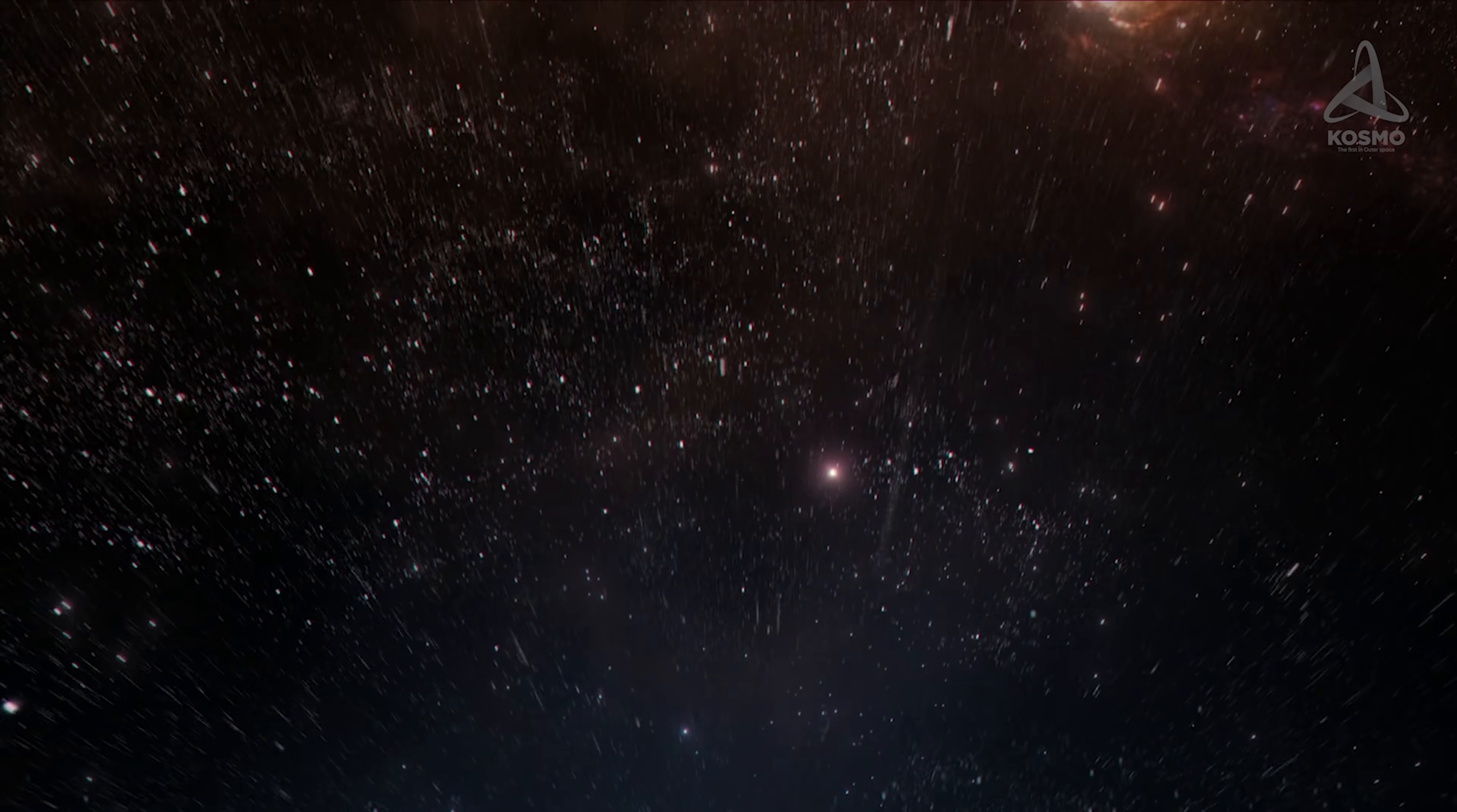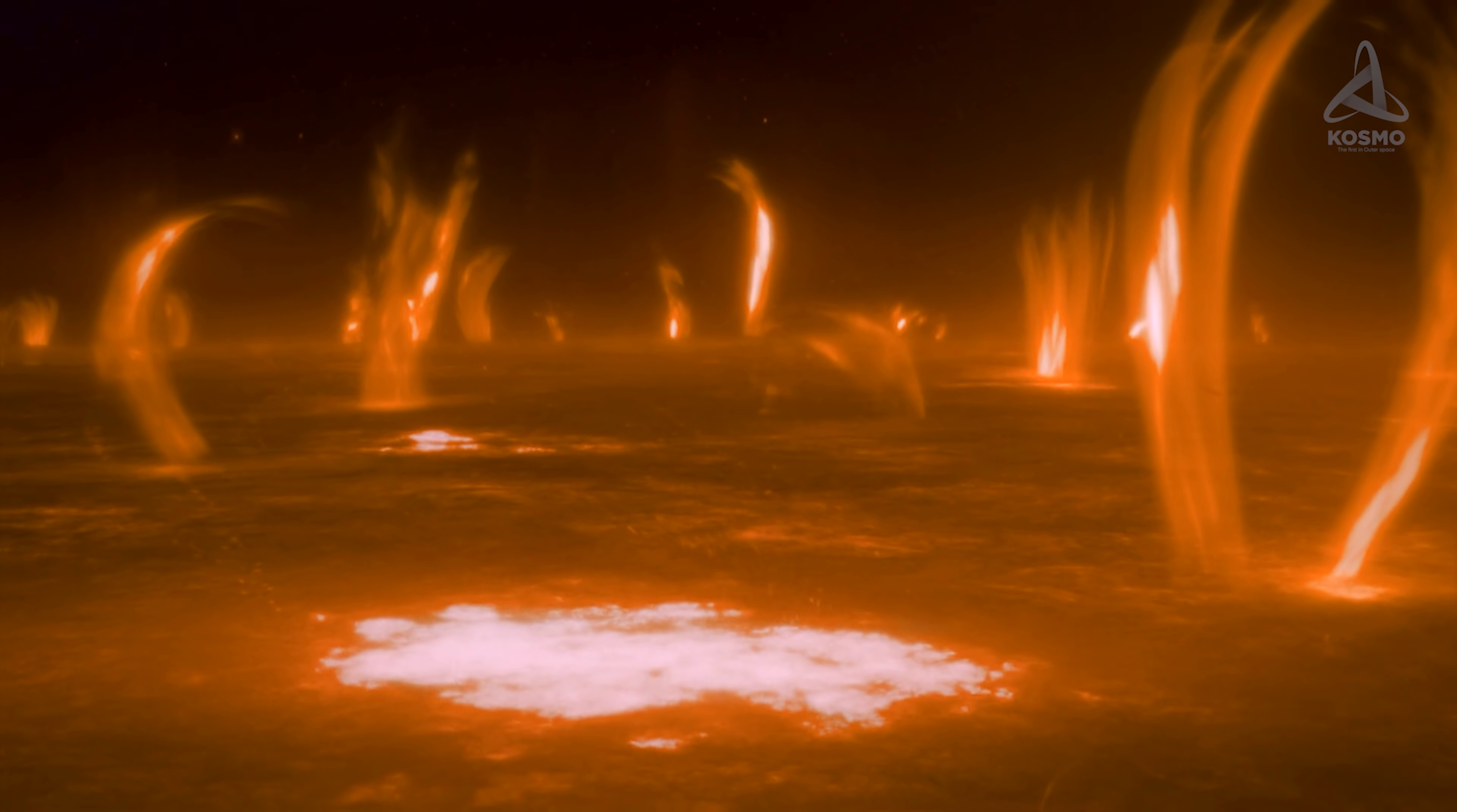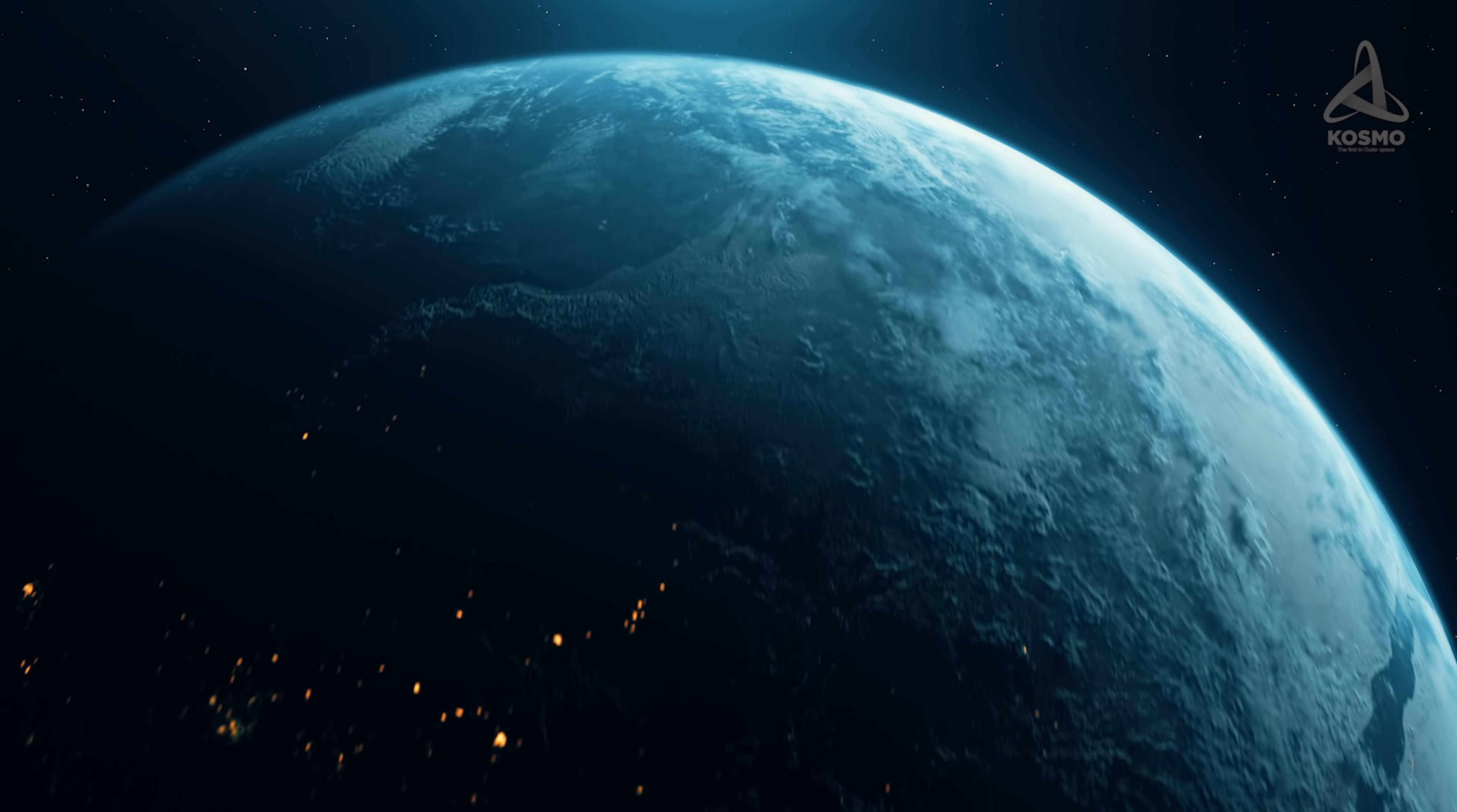The other version has it that the space object was born just like any other star on compression of interstellar gas. At the same time, the mass of the object proved to be too small to unleash any thermonuclear reactions in its interior. It goes without saying that in this manner it may turn out only as a gas giant or a brown dwarf, but not a rocky planet similar to the Earth.